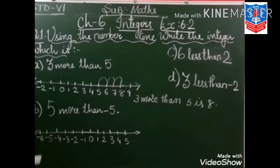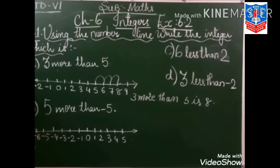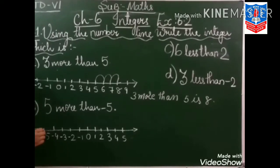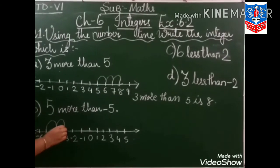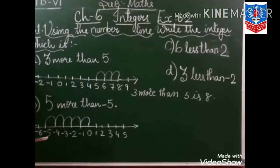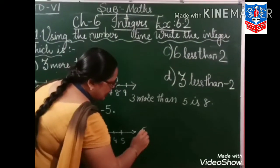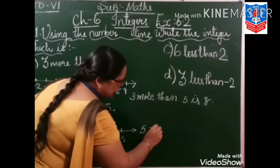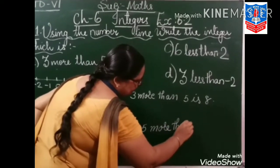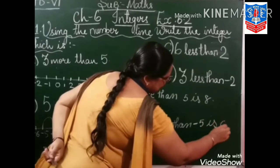Next: 5 more than minus 5. Now where is minus 5? Here it is. 5 more — we move 1, 2, 3, 4, 5 steps. So our answer is 0. 5 more than minus 5 is 0.